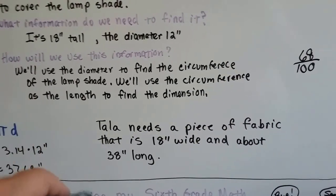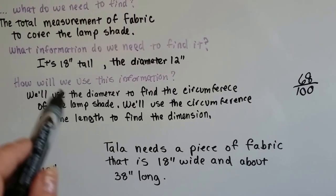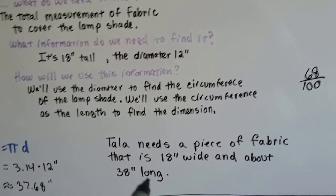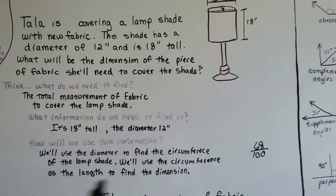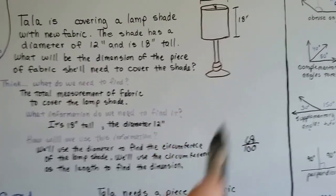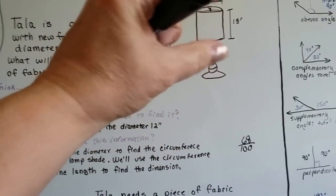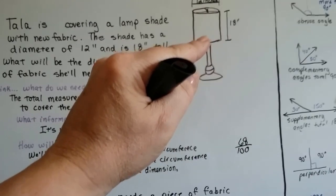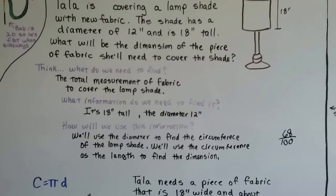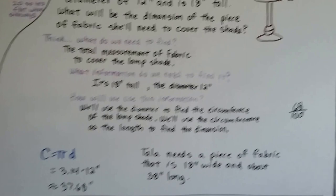So Tala needs a piece of fabric that's 18 inches wide, or tall, and 38 inches long. And it should cover that, shouldn't it? In fact, if this was really happening, she'd want to get it to be a little bit more than 18 inches so that she could overlap it over the top and over the bottom to make smooth edges. So this is just a math problem. It's not perfect.